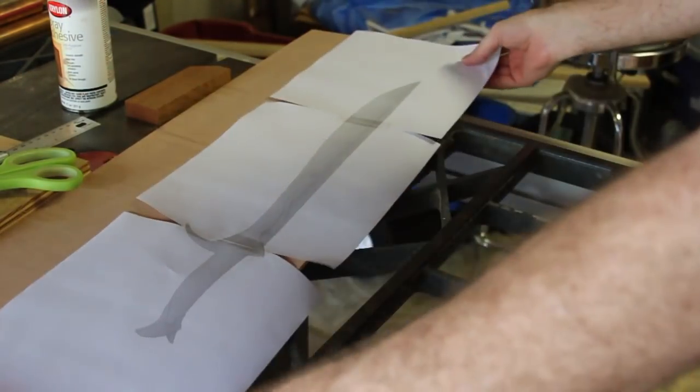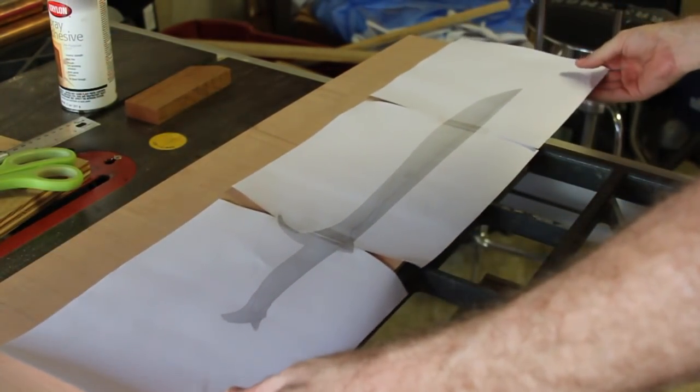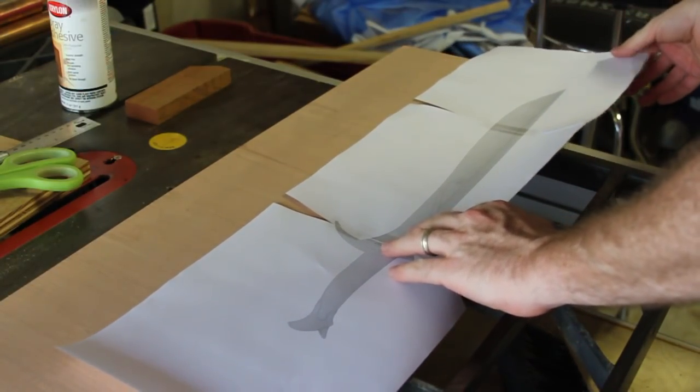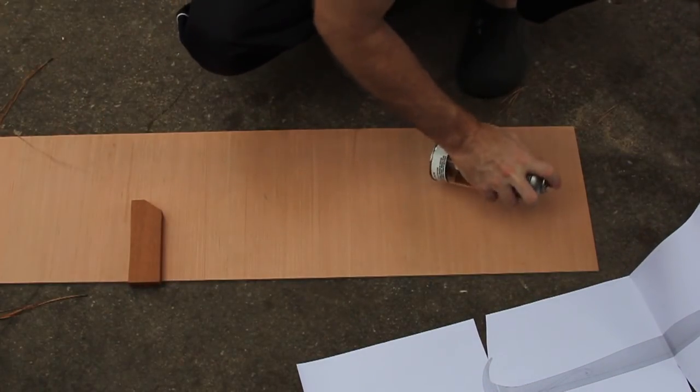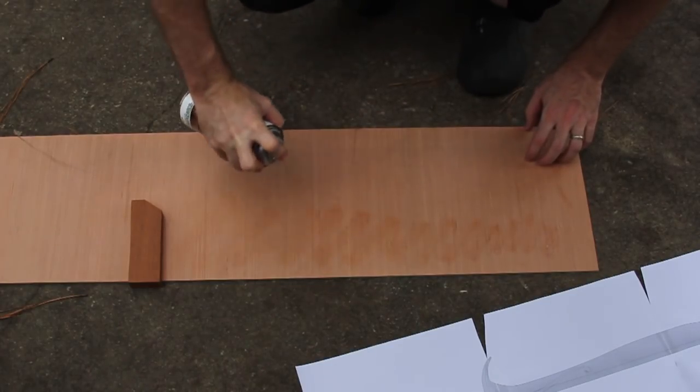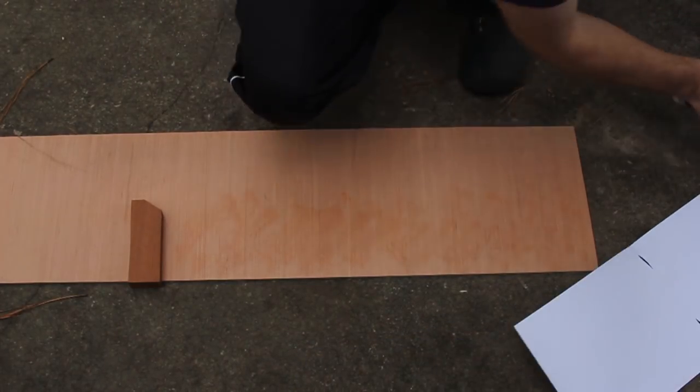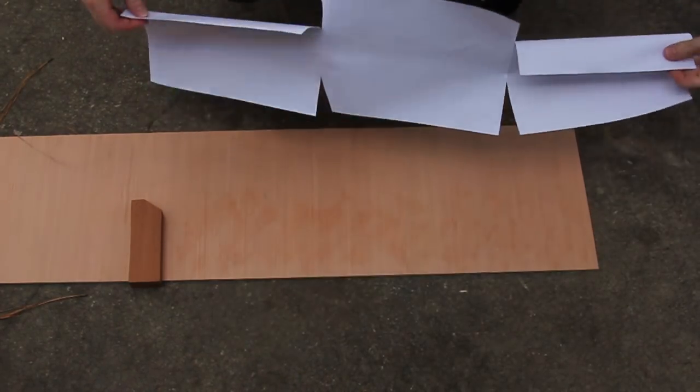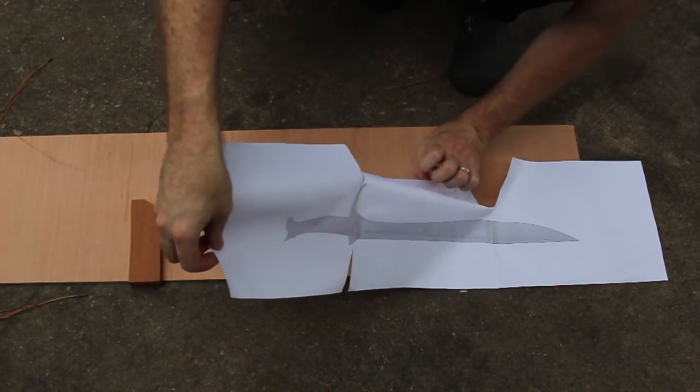But on a more fundamental level, this particular sword is Orcrust, or Goblin Cleaver. Goblins also call it Biter. This is one of the swords that Gandalf and company find in the Troll Horde during the events of the Hobbit. As a long time Tolkien fan, this really appealed to me.